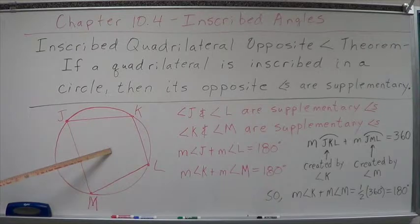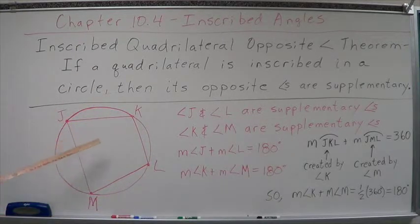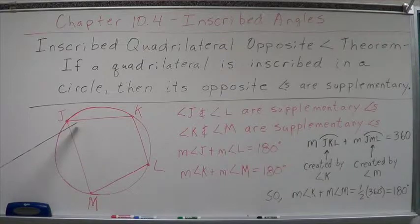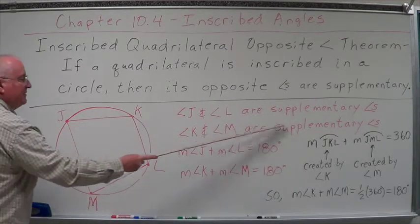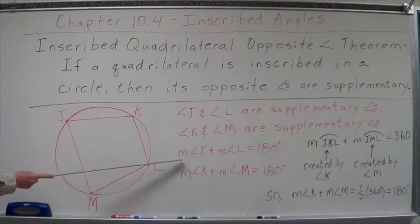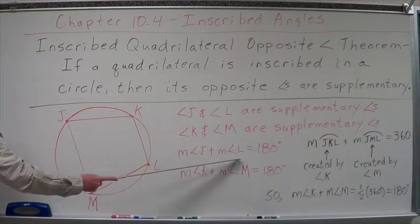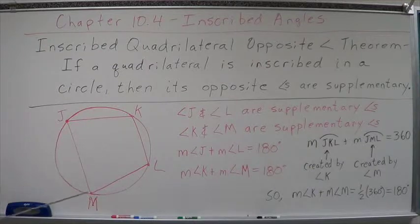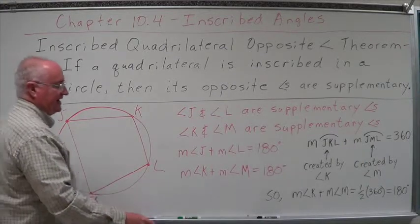So what we're talking about is if we have a quadrilateral inscribed in a circle — here's a picture of it — the opposite angles are going to be supplementary. We have J, K, L, M. Then J and L are supplementary angles, and angles K and M are supplementary. That means the measure of angle J plus the measure of angle L equals 180 degrees, and the measure of angle K plus the measure of angle M equals 180 degrees.